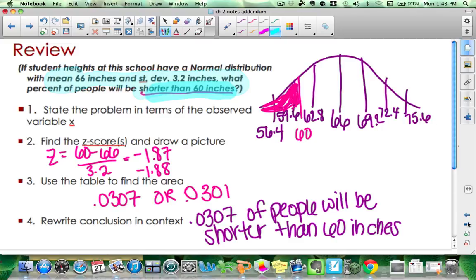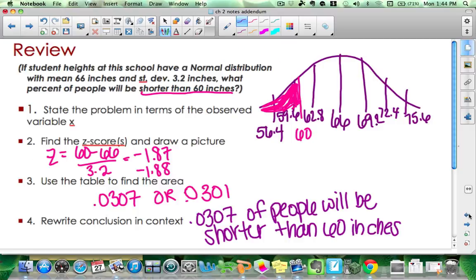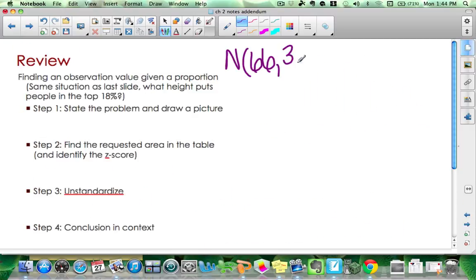In a backward z-score problem, we're given the percent and asked for the number. So this one, same situation as the last slide, which means we're approximately normal with a mean of 66 inches and a standard deviation of 3.2. And I want to know what puts us in the top 18 percent. This one is a backwards z-score problem.